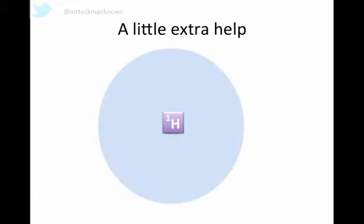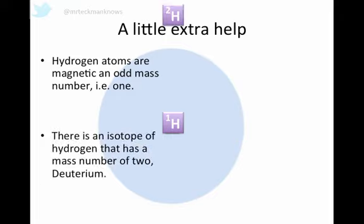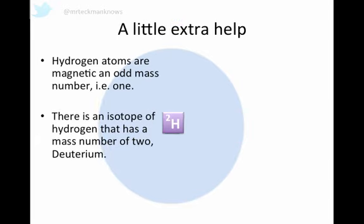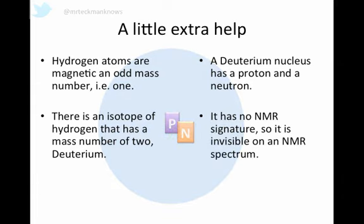Finally, there is another little extra trick we need to learn about in NMR. Hydrogen atoms are magnetic, as we know, as they have an odd mass number, because they have one. There's an isotope of hydrogen called deuterium, and that has two as its mass number. It has a proton and one neutron. Deuterium, because it isn't magnetic, it has a mass number of two, has no NMR signature. It's invisible on NMR spectrum. It's not magnetic, so it doesn't show up in NMR.